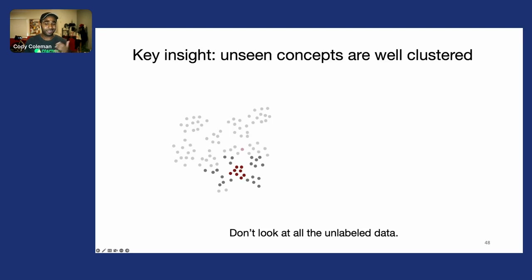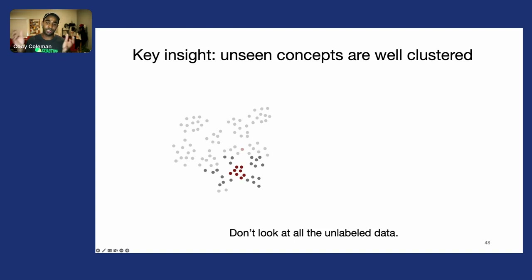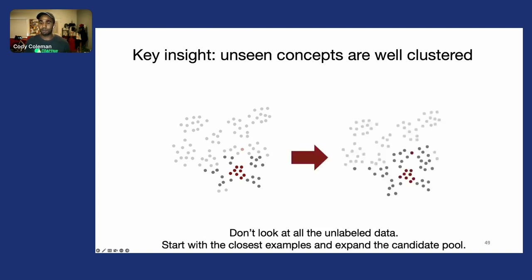This means we actually don't need to look at all of the unlabeled data. Most of the data for a single concept—whether N95 masks, delivery trucks, or anything like that—only represents a very small fraction of the latent space. So instead, we can start with the closest examples to our seed set and expand the candidate pool over time as we label more.